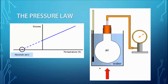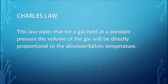Here we have a graph which depicts that increasing the temperature causes the pressure to increase proportionally. We can write the formula for this law as P1 over T1 equals P2 over T2, where P1 and T1 are the initial pressure and temperature respectively, and P2 and T2 are the final pressure and temperature respectively.